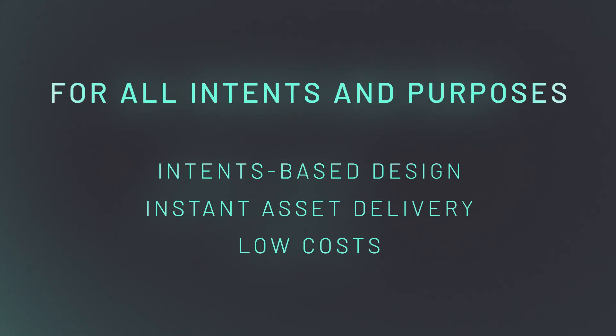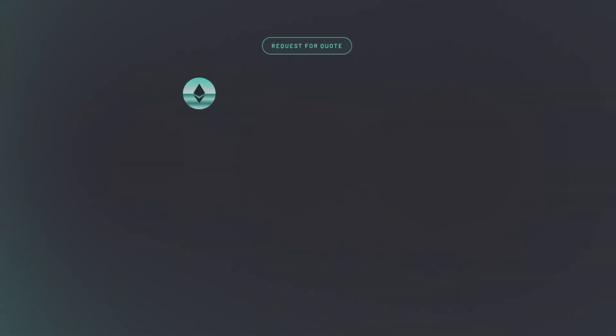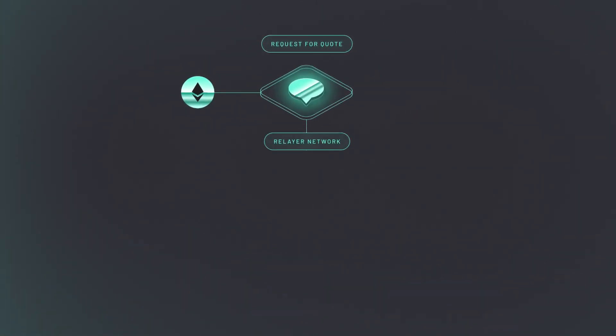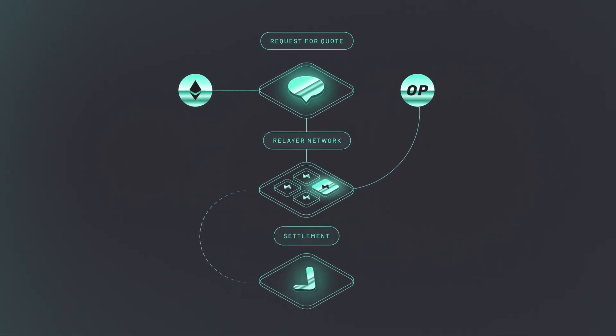With Across, cross-chain intents are powered by a modular system consisting of three layers: the request for quote mechanism, a network of competitive relayers, and a settlement layer.